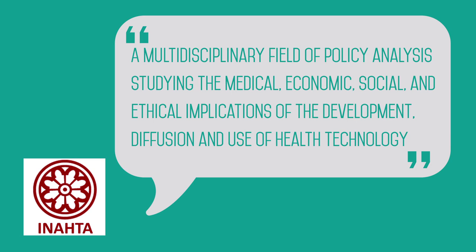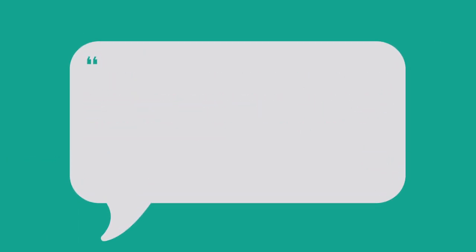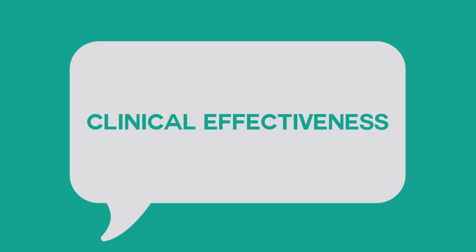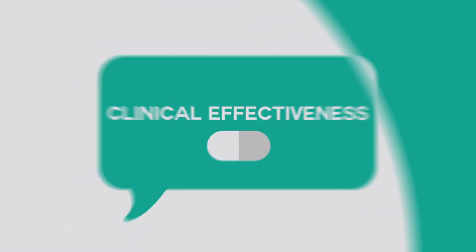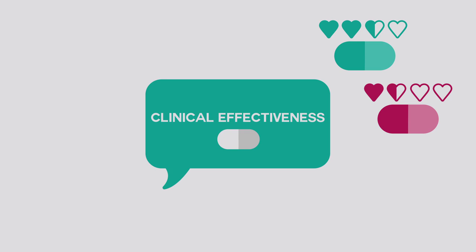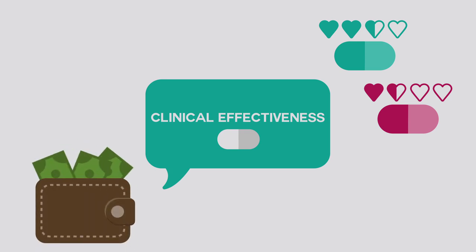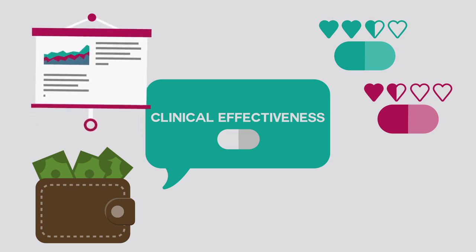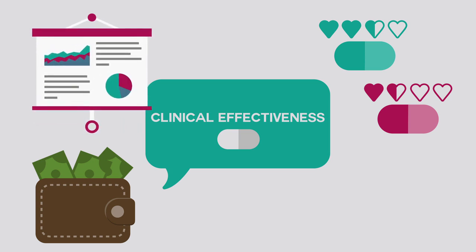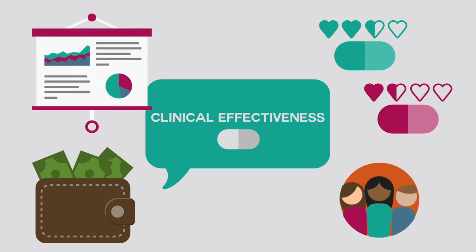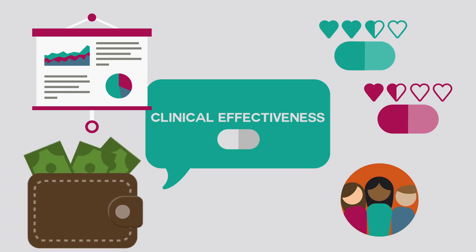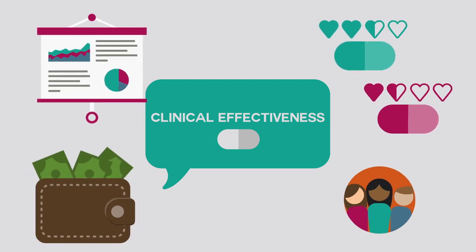In simple terms, this means that within HTA, we study the clinical effectiveness of a medical intervention such as a new drug — i.e. how much does it benefit patients compared to what treatments, if any, are currently available — what the economic impact of making it available to patients would be, how health policy might be impacted by the new technology becoming available, and what the social and ethical implications might be for patients and wider society. It is a very multidisciplinary activity, focused not just on costs or benefits, but a wider range of issues.